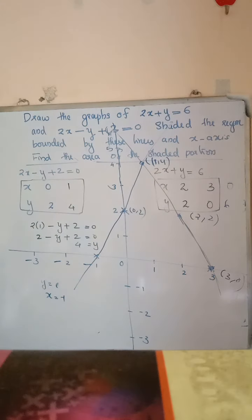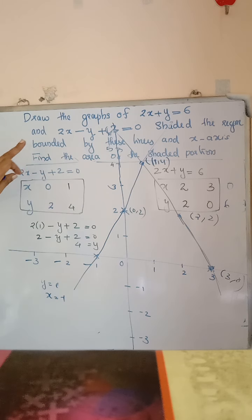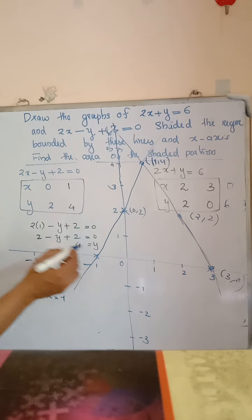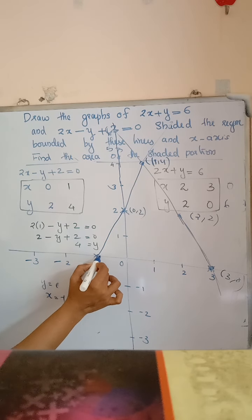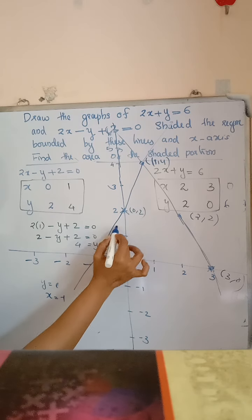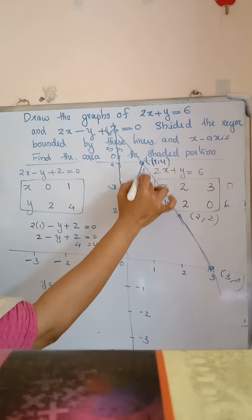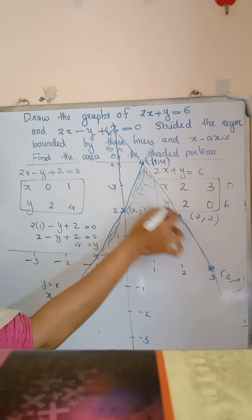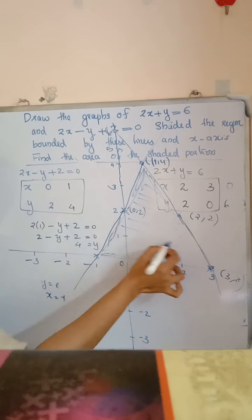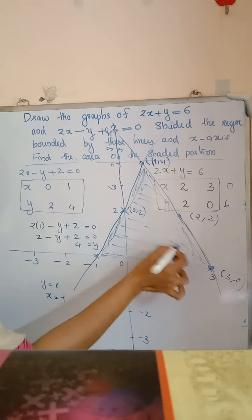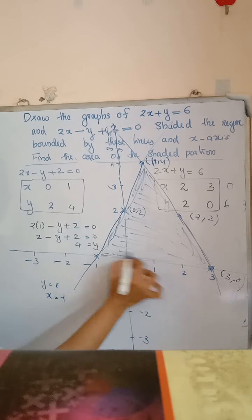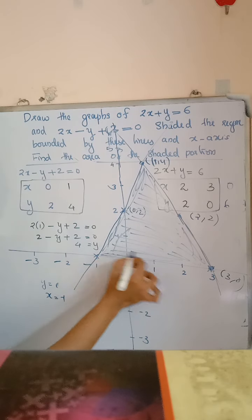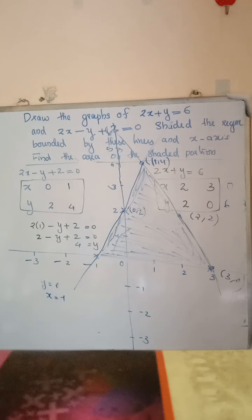This is the graph of the two lines. We shade the region bounded by these two lines and the x-axis — the portion above the x-axis and between the two lines. This is the shaded portion of the given region.